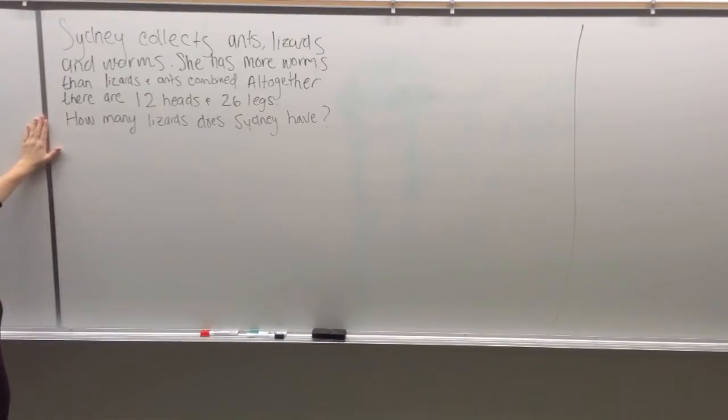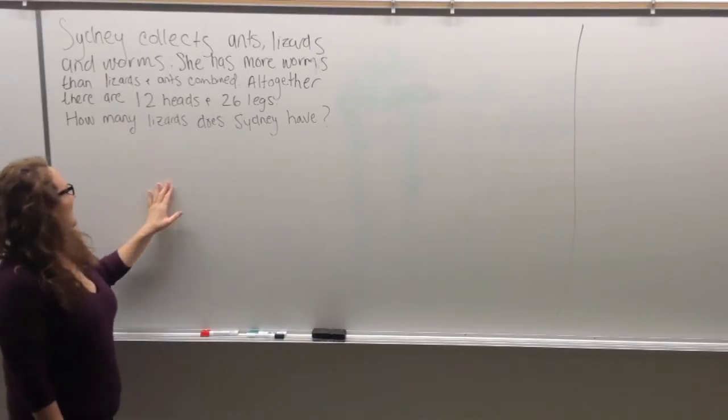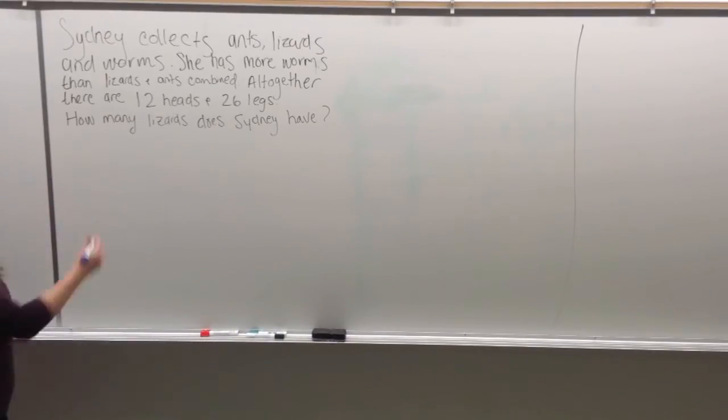Alright, so Sydney collects ants, lizards, and worms. She has more worms than lizards and ants combined. All together there are 12 heads and 26 legs. How many lizards does Sydney have? So the first thing we're going to do is write up the sentence, what are we looking for? This way, at the end of the question, we can come back and make sure we've actually answered it.